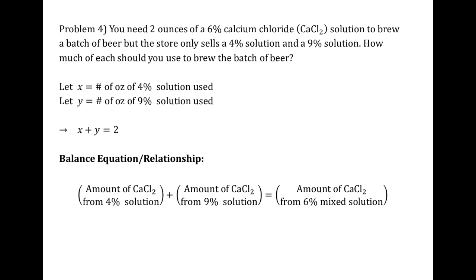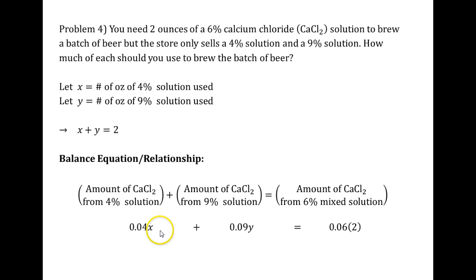The balance relationship states that the amount of calcium chloride must be the same: amount from the 4% solution plus amount from the 9% solution equals amount from the 6% mixed solution. The 6% solution provides 0.06 times 2 ounces of calcium chloride. The 4% portion provides 0.04x and the 9% portion provides 0.09y. So our second equation is 0.04x plus 0.09y equals 0.12.